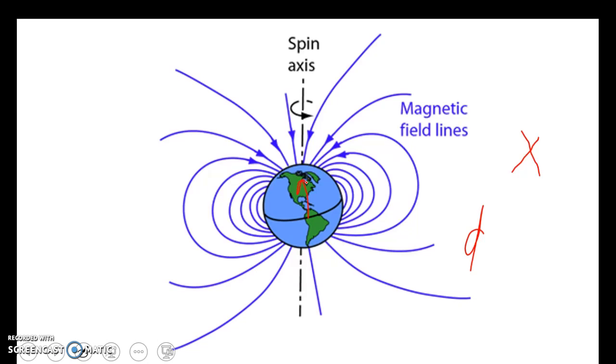Magnetic fields surround electric currents, so we surmise the circulating electric currents in the Earth's molten metallic core are the origin of the magnetic field. A current loop gives a field similar to that of the Earth.